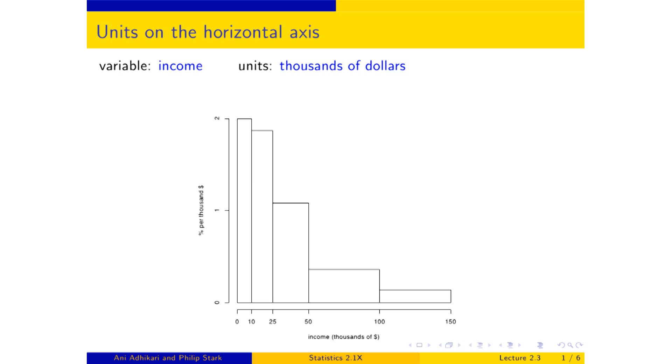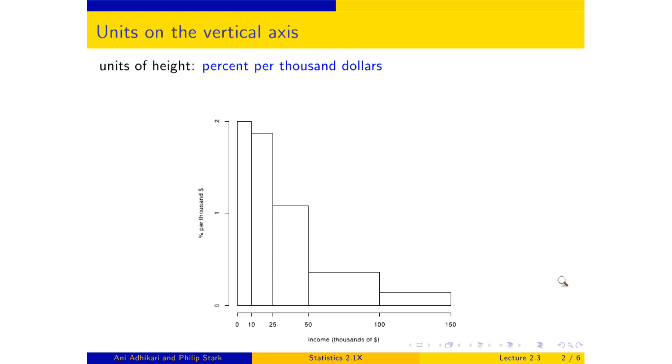It's the vertical axis that I want to look at. Units percent per thousand dollars, because we took the area that was the percent and divided by the width of the interval that was in thousands of dollars. Let's take a look at what that means.